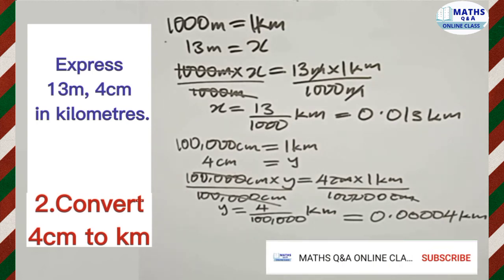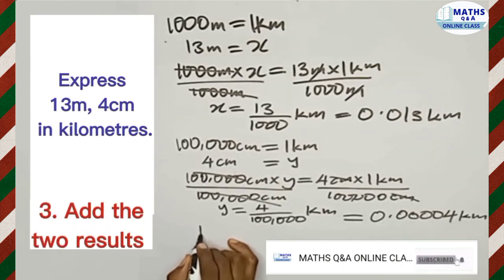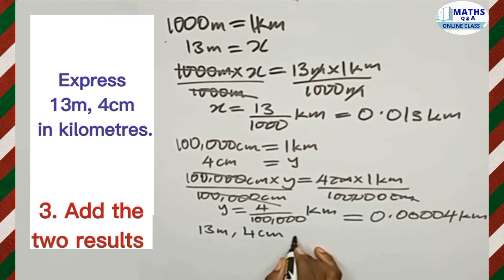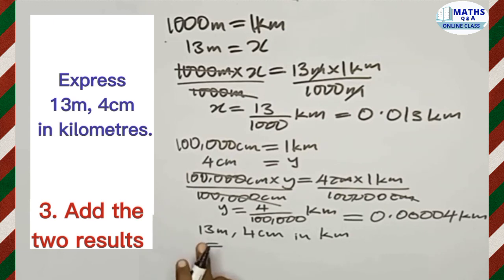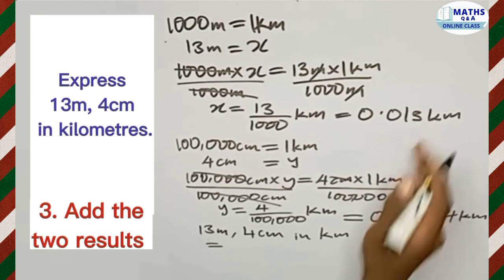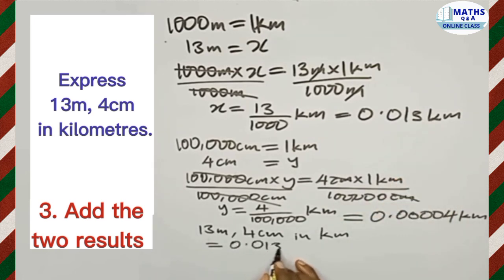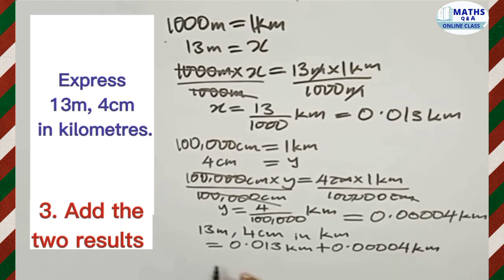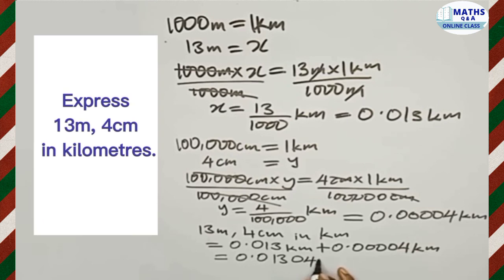Changing this into decimals, we have 0.00004 kilometers. So 13 meters 4 centimeters in kilometers equals 0.013 kilometers added to 0.00004 kilometers, which sums to 0.01304 kilometers.